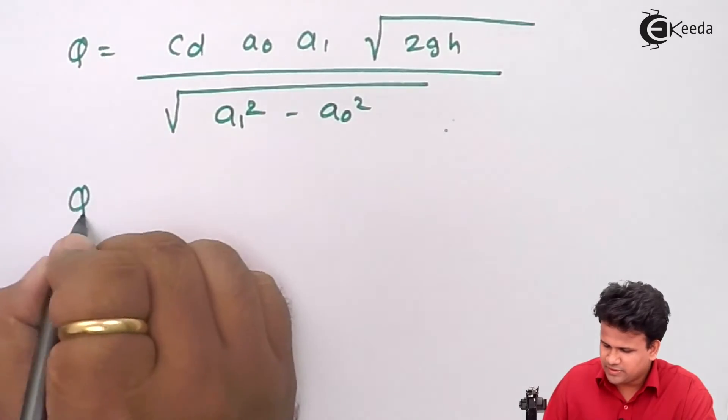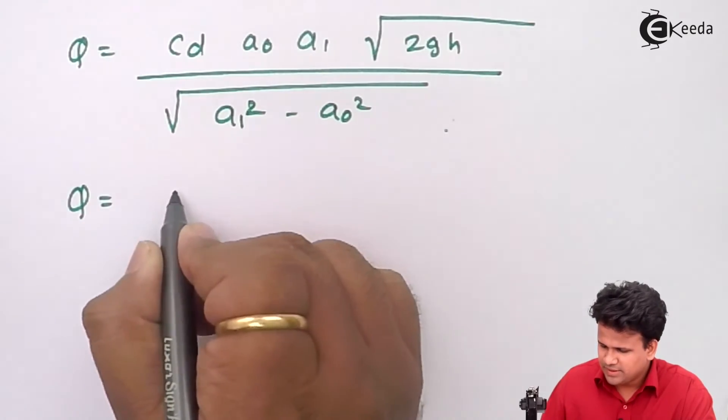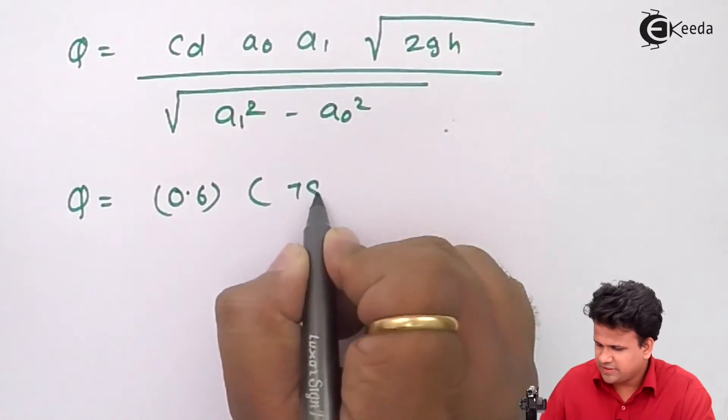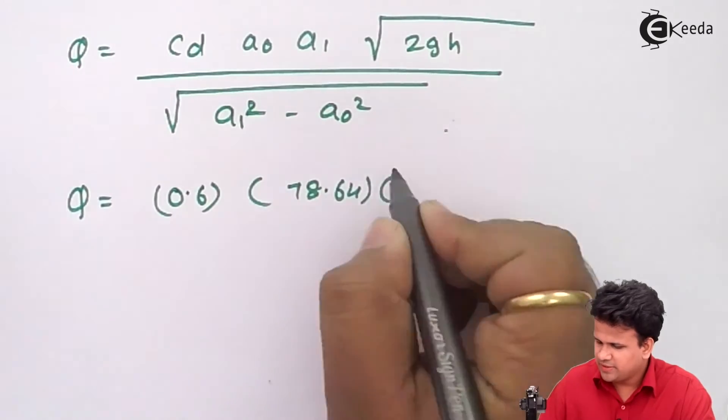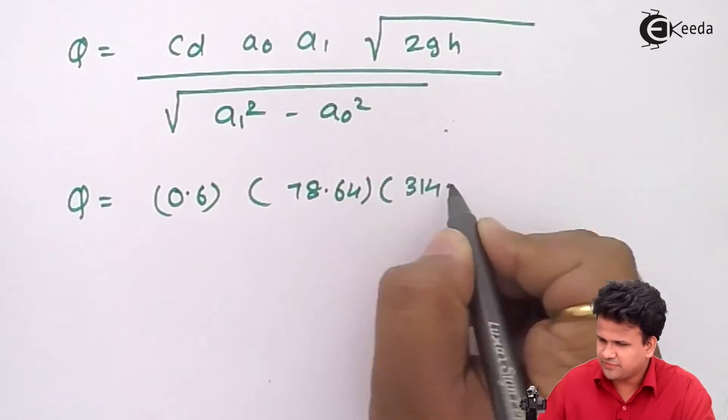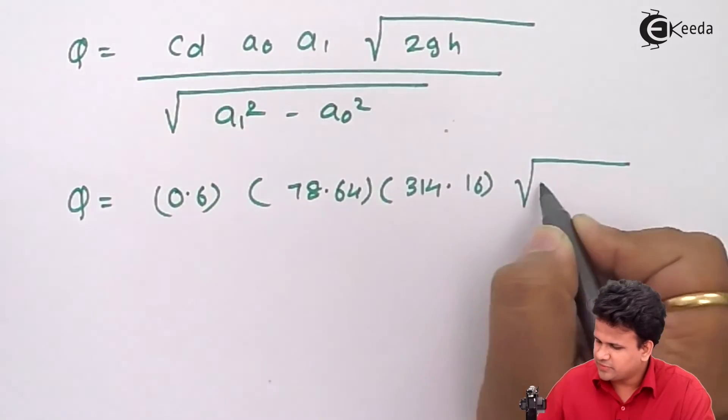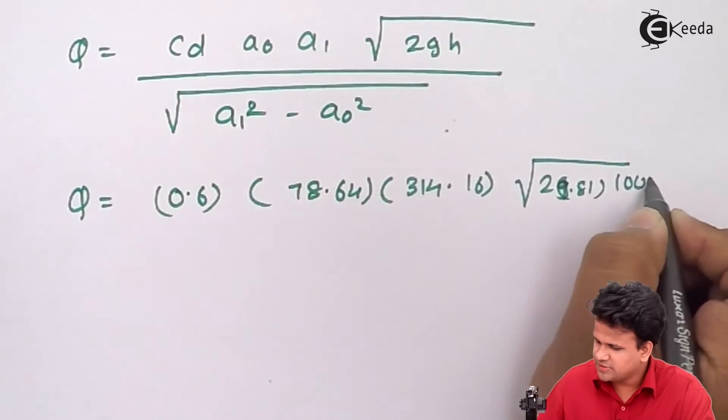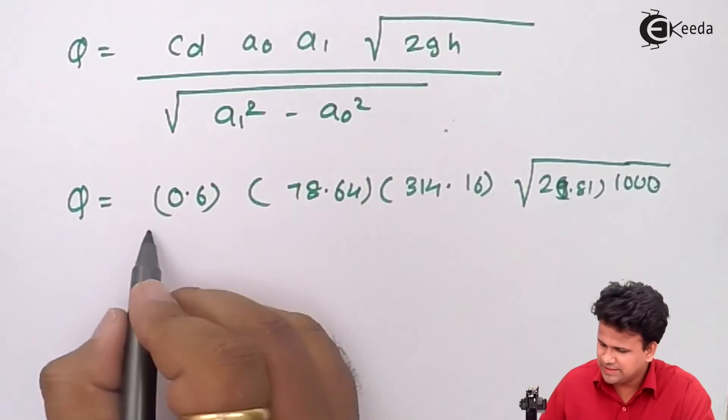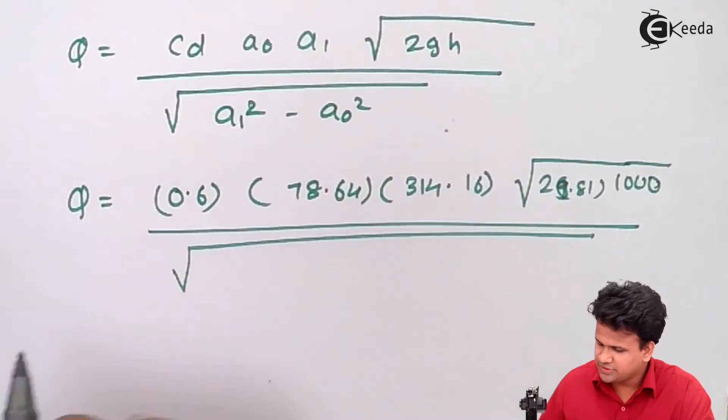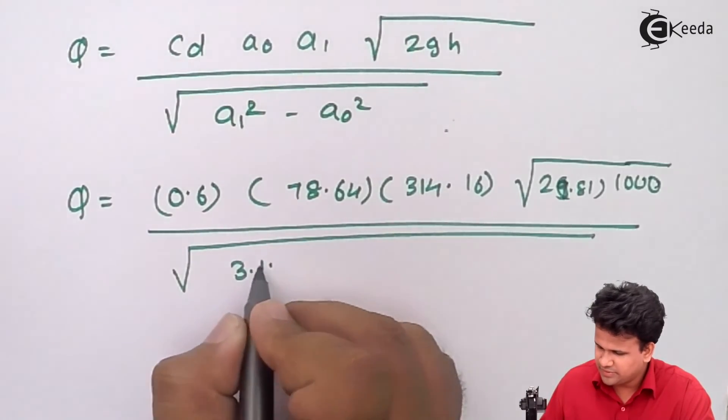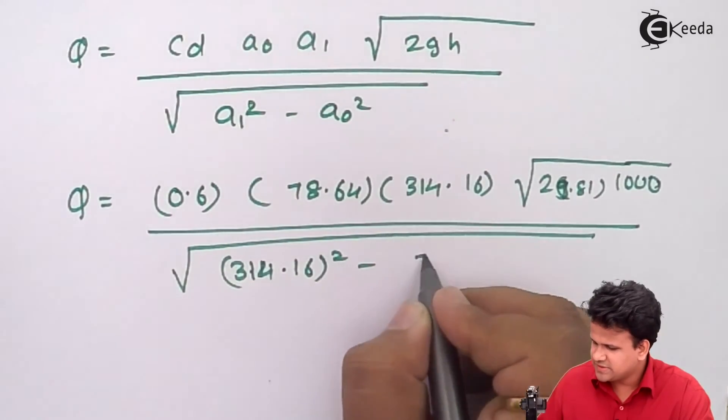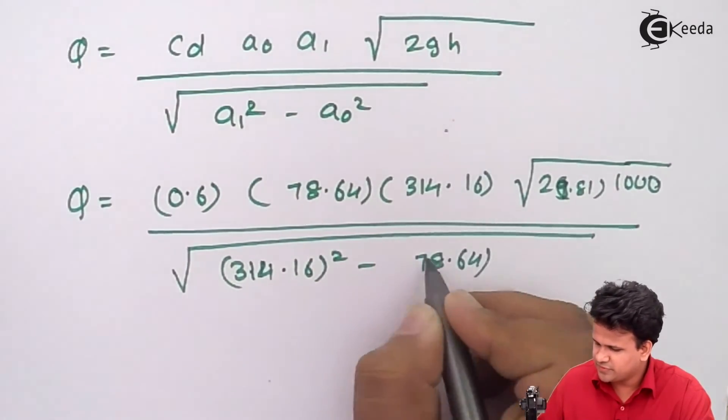Q equals 0.6 times a0 has a value of 78.64 into a1 has a value of 314.16 into square root of 2g that is 9.81 into 1000, keeping everything in centimeters for easier calculation, divided by square root of 314.16 the whole square minus 78.64 the whole square.